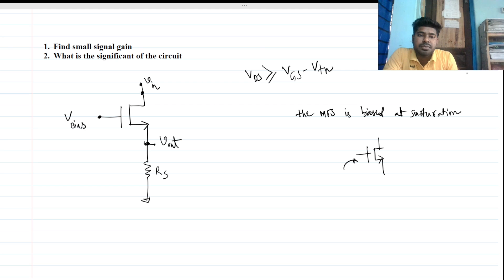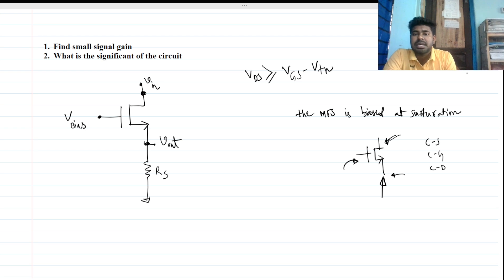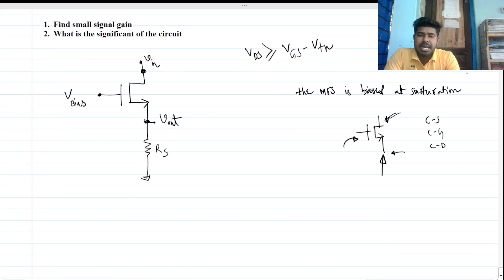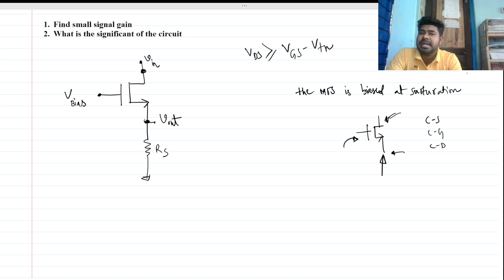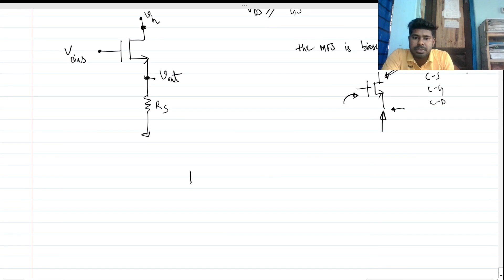Normally for conventional topologies we give the input here and take output from here, or give the input here and take output from here. There are three topologies: CS, CG, and CD. But here the topology is different — we are giving the small signal input at the drain. We will first write the small signal model, then find the gain by writing KCL and KVL.